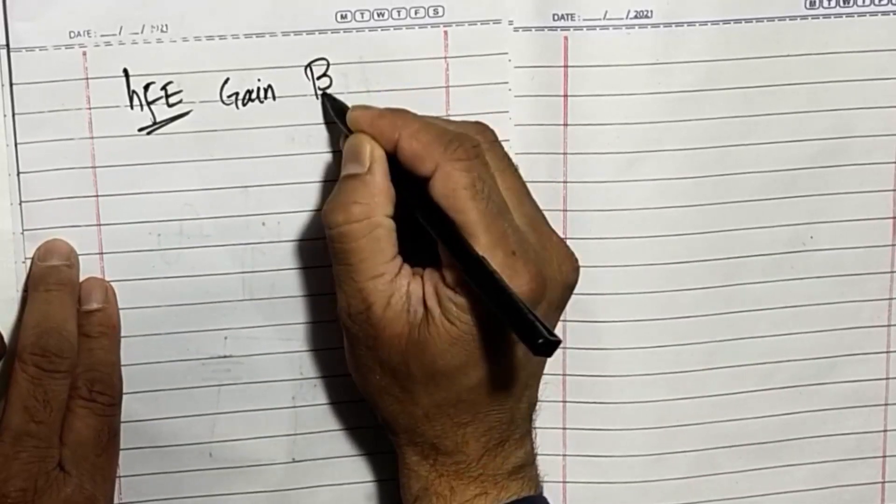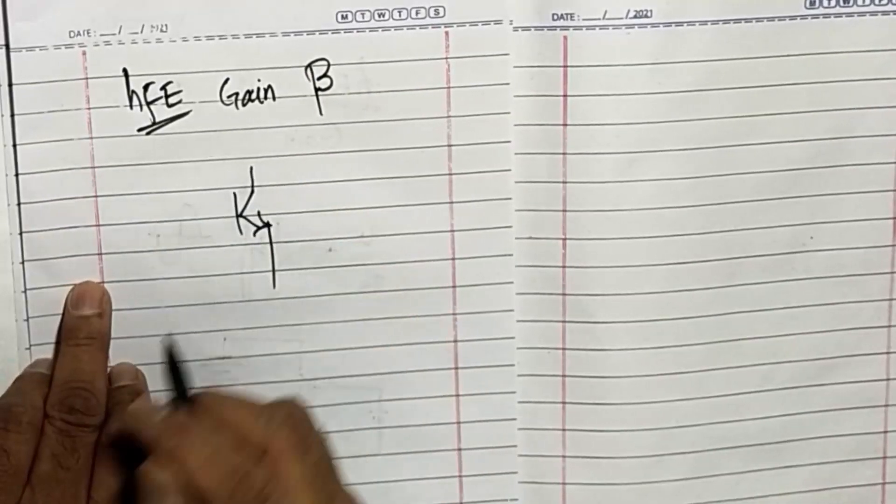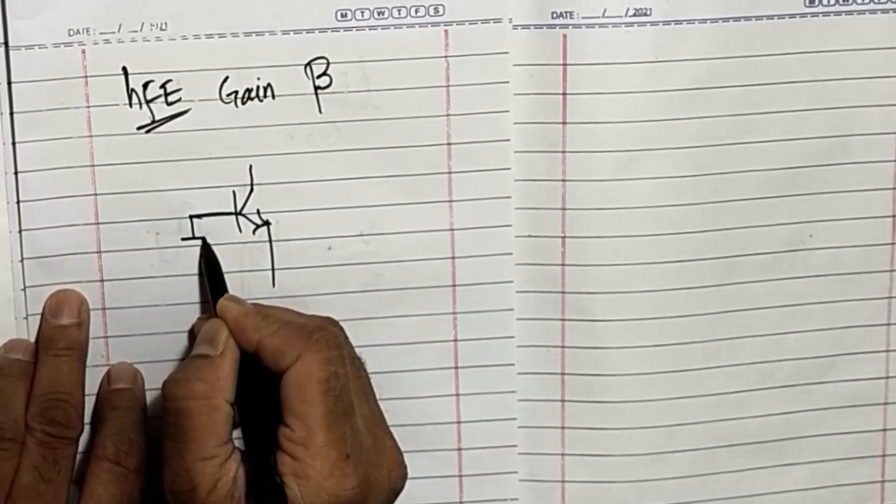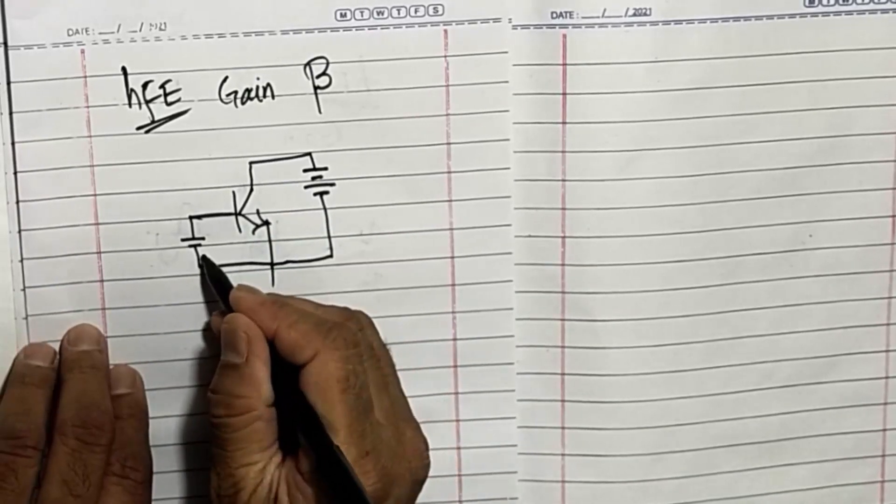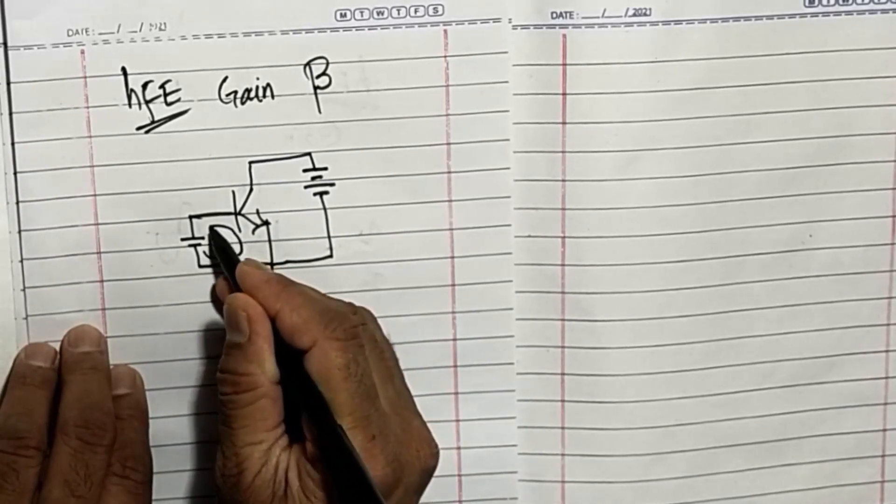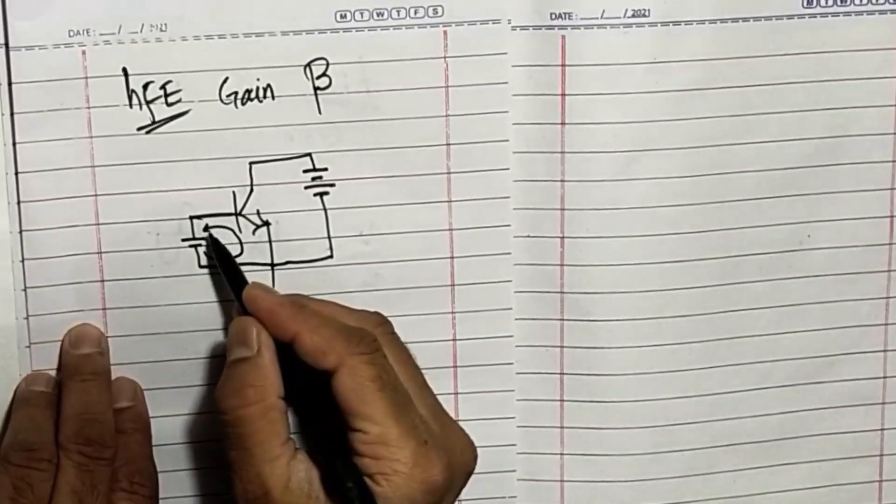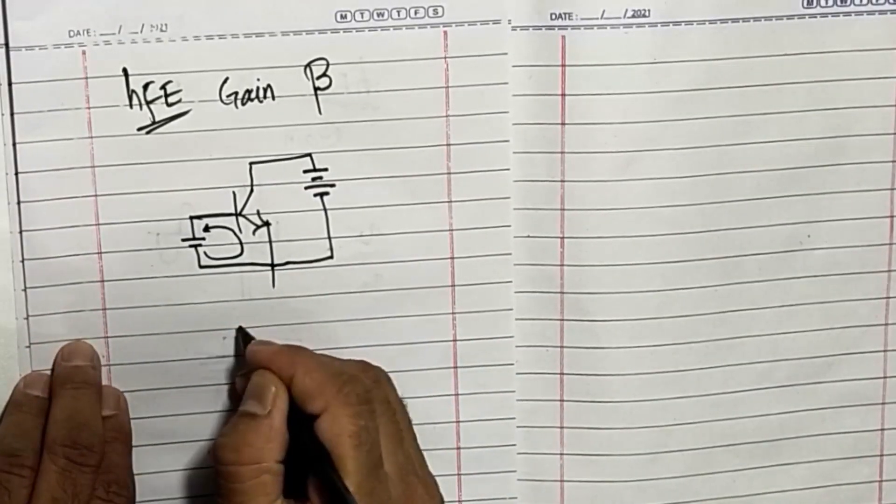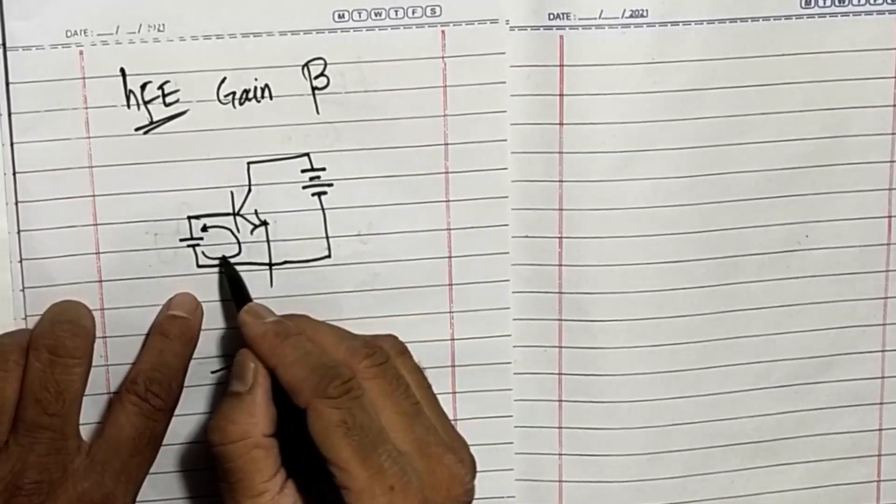It is also known as beta. This is a transistor. When we connect a battery to the transistor for biasing, a current flows from emitter to base. That is called IB, base current.